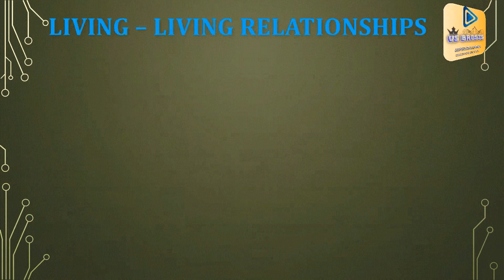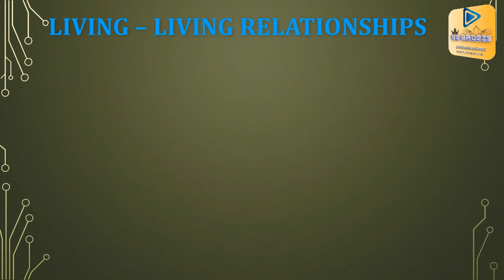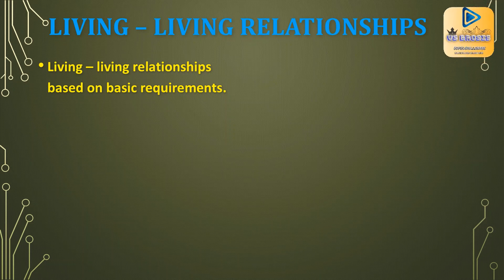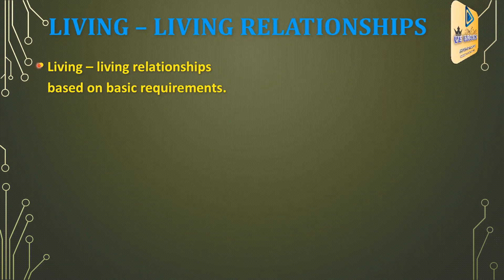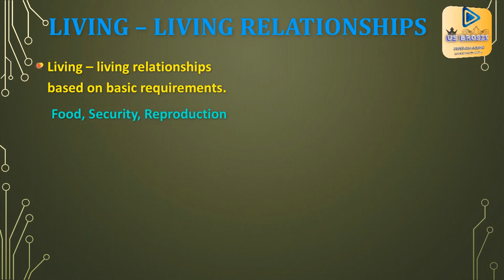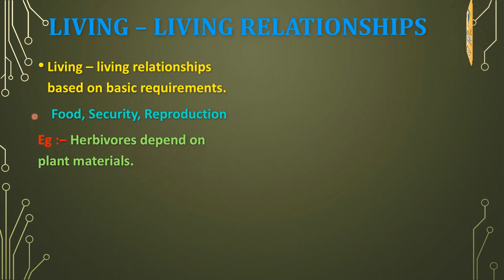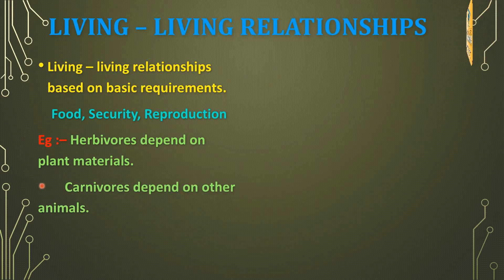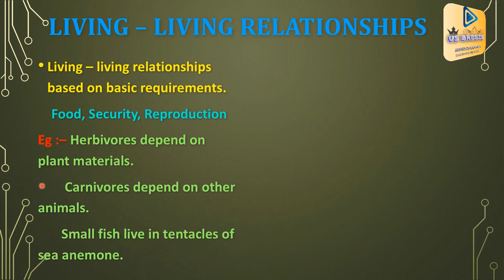Now we move to the interaction between living components — living-living relationships. The basic requirements in living-living relationships are food, security, and reproduction. Examples are: herbivores depend on plant materials; carnivores depend on other animals; and small fish live in the tentacles of sea animals.